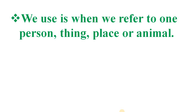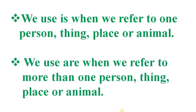So kids, we use 'is' when we refer to one person, thing, place or animal. We use 'are' when we refer to more than one person, thing, place or animal.